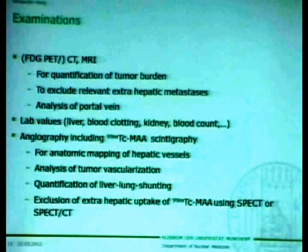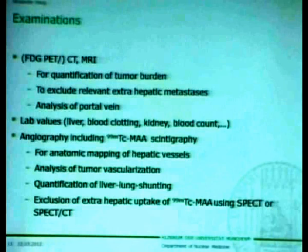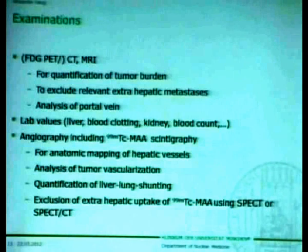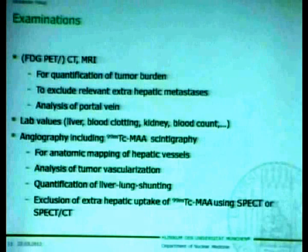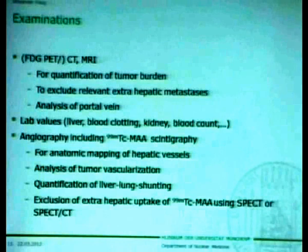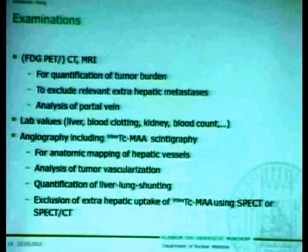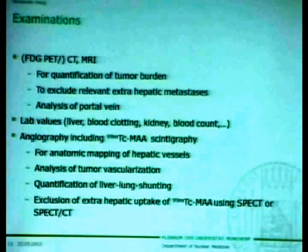We have to take some lab values into consideration: liver enzymes, liver function, blood clotting, kidney parameters, and blood count. Of course, we have to perform an angiography to understand the anatomy of the hepatic vessels, to analyze tumor vascularization, and to be sure that the therapeutic radioembolization can be performed technically — meaning we can place the catheter where we want to treat the tumor while sparing as much liver parenchyma as possible. During the angiography, we also perform a technetium MAA scintigraphy, which we know from lung perfusion scintigraphy.